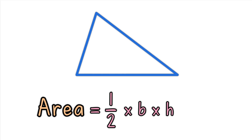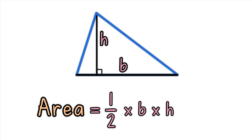B is the distance along the base. H is the height, measured at right angles to the base. Area equals one-half times base times height. The formula works for all triangles. Another way of writing the formula is bh over 2.